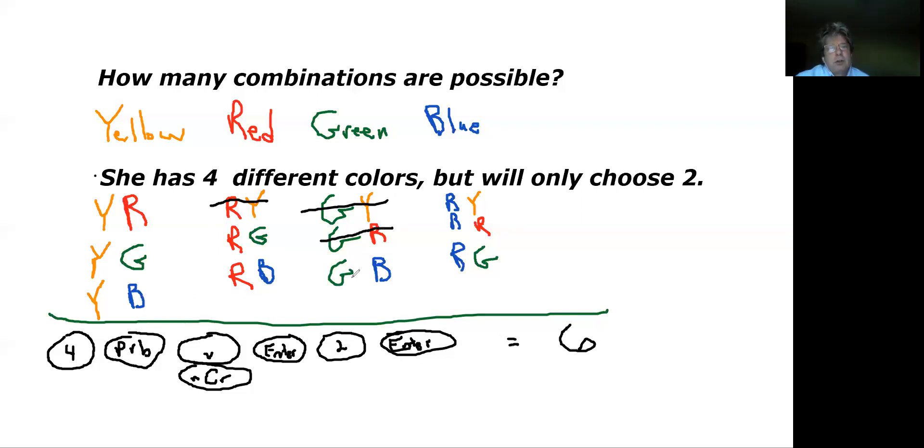For blue: blue-yellow has already been repeated, blue-red has already been used, and blue-green has already been used. There's really no new choices there because they were already picked in the other options.